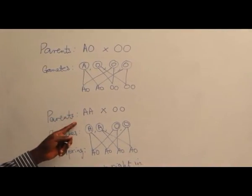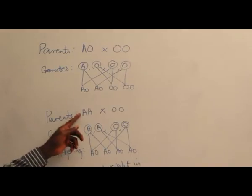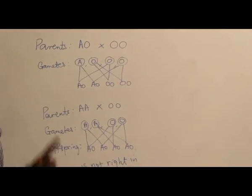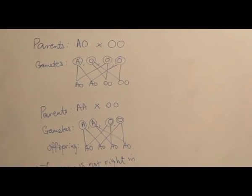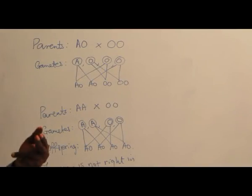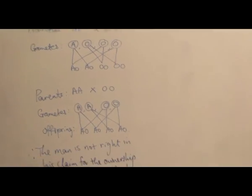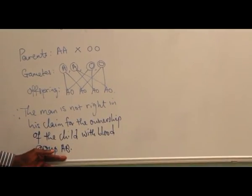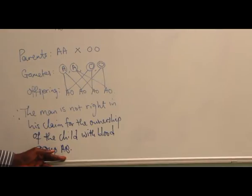And antigens A and B are co-dominant. None of them is recessive. None of them is dominant. They are co-dominant. When you throw them out there, the individual will express the character.